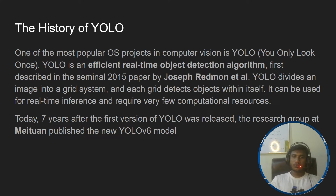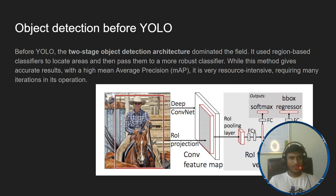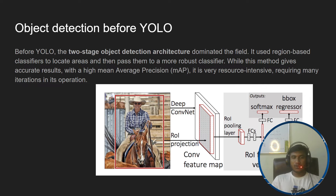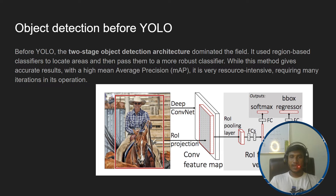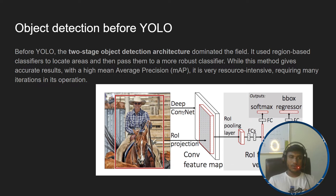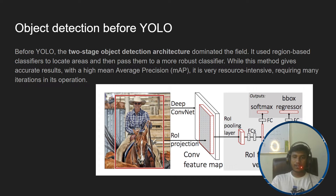Today, seven years after the first version of YOLO was released, the research group at Meituan published the new YOLOv6 model. Before YOLO, the two-stage object detection architecture dominated the field. It used region-based classifiers to locate areas and then passed them to a more robust classifier. It was very resource intensive, requiring many iterations in this operation.